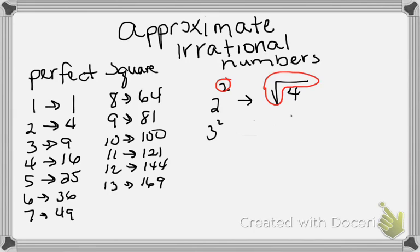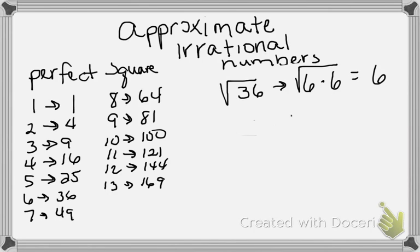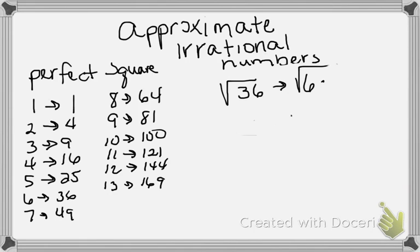To find a square root, you have to think: what number times itself gives me that number? Let's do a perfect square so you can see what I mean. Let's say we have √36 — I need to know what number times itself gives me 36. Looking at our perfect squares, 6×6=36, so 6 is my answer. That's actually a rational number, since 6 can be expressed as a fraction like 6/1.